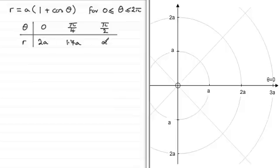So where would these points be? Well when theta equals 0, r is equal to 2a, so theta equals 0, r equals 2a is going to be this point here. Then moving round when theta equals pi upon 4 radians, r is 1.7a, so here's 1a, 2a, so 1.7a is going to be roughly about there. And then for pi upon 2, r is equal to a, so that's clearly that point there.